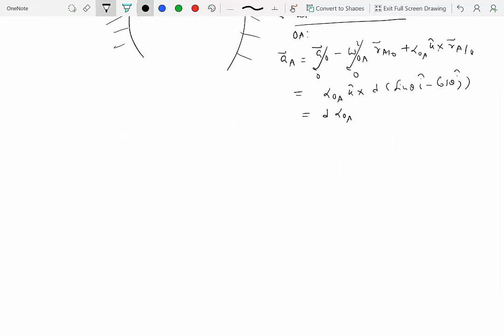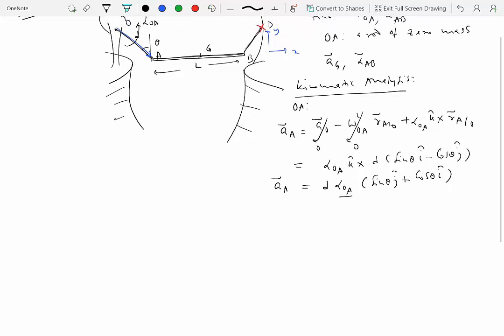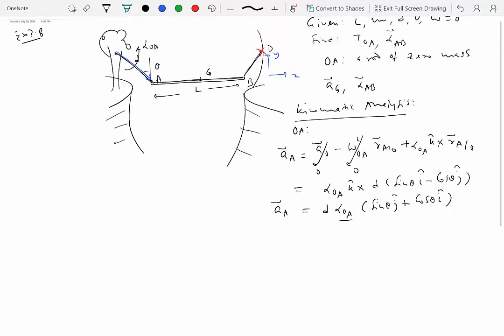So let's simplify this. We get D alpha_OA sine theta, k cross J is negative I hat, so this is going to be plus cosine theta I hat. And that is the acceleration of A. Of course, everything is known over here with the exception of alpha_OA. So we don't know that. That's fine. So we'll keep that as an unknown.